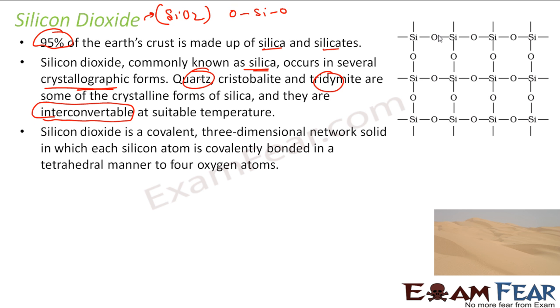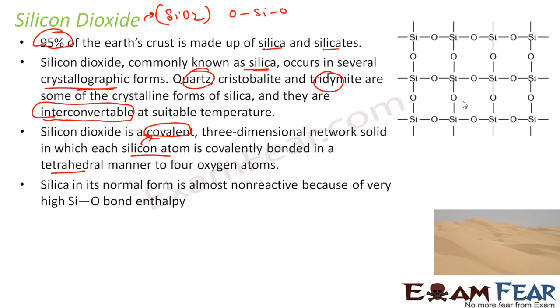If you see the structure, that is why it is solid - because it is a covalent network solid, similar to boron and carbon. It's a three-dimensional network structure, not two-dimensional. What you are seeing is a two-dimensional representation, but actually it is a three-dimensional solid structure. Each silicon is bonded in a tetrahedral manner with four oxygen atoms.